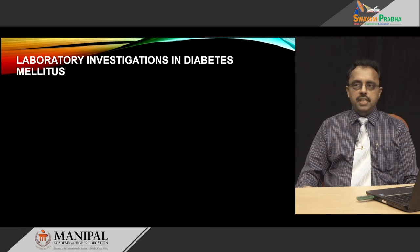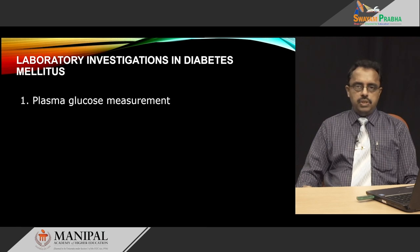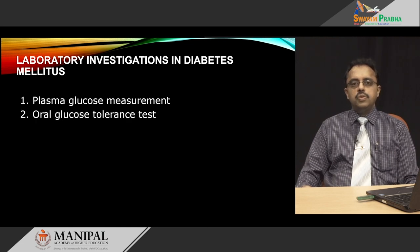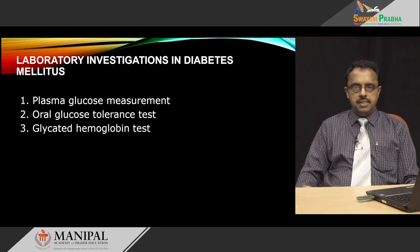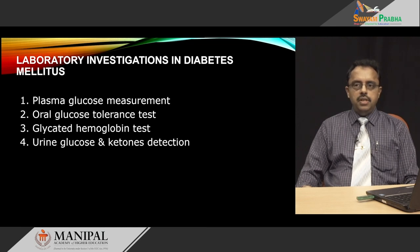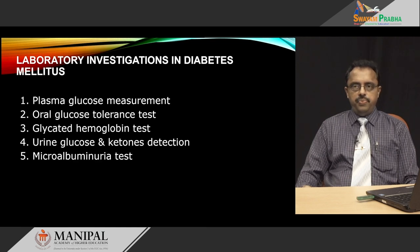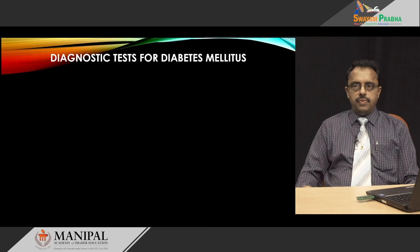Coming to the laboratory investigations in diabetes mellitus, we will list the different tests done in labs for diabetic patients. The first is plasma glucose measurement, the second is an oral glucose tolerance test, the third is glycated hemoglobin test, followed by urine glucose and ketones detection, and microalbuminuria test.